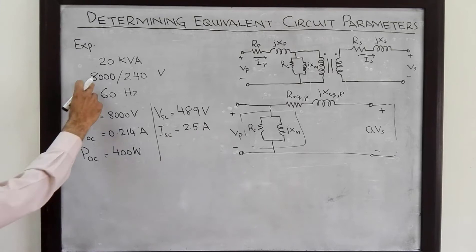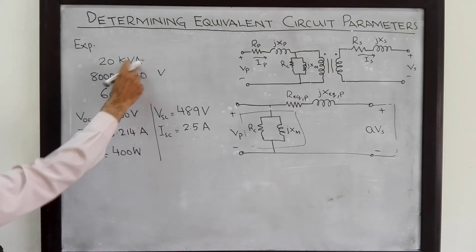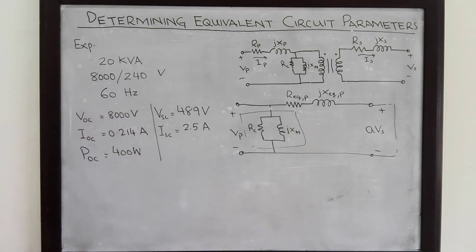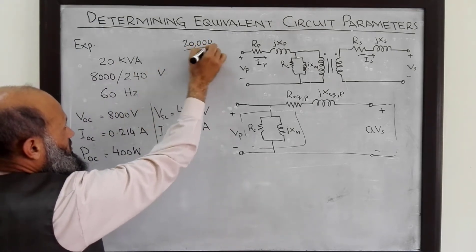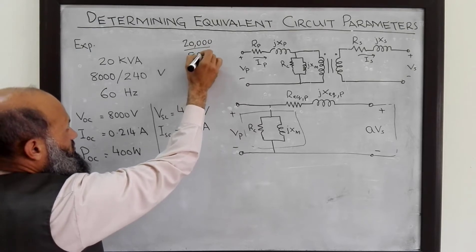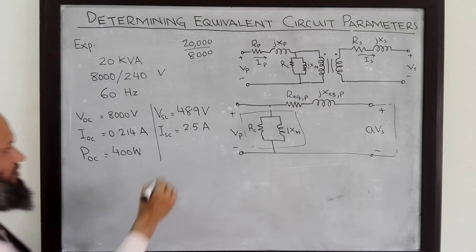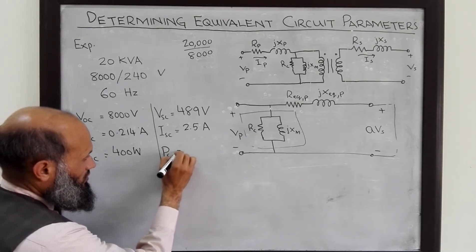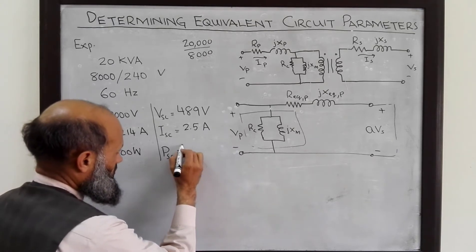We can also determine the rated current by dividing the kVA rating by the voltage rating. That is 20000 divided by 8000. So, it comes out to be equal to 2.5 ampere. We also measure the power and this power is 240 watts.